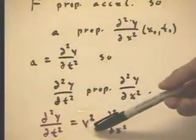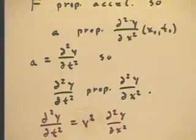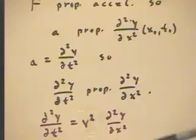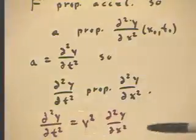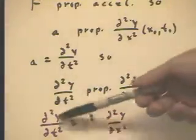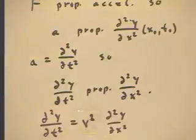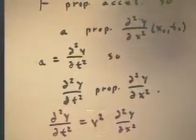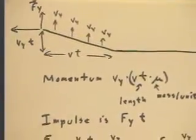The proportionality constant turns out to be the squared velocity of the wave. To derive that, we'd need to know something about how a pulse travels along the wave and what wave velocity means. You can also get this from the form of a sinusoidal traveling wave: the second t-derivative gives you omega squared, the second x-derivative gives you k squared, and when you divide omega squared by k squared you get v squared. The next thing we're going to look at is why a wave traveling in a string has the velocity it does.